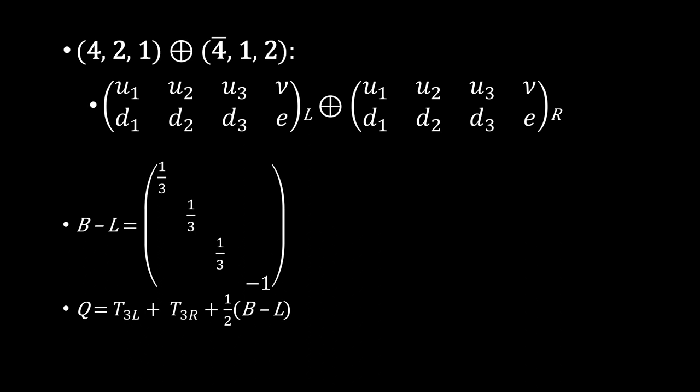This model explains charge quantization. While electric charges are integer multiples of some smallest charge in the standard model, concretely, the 4 and 4 bar of SU(4) color identify lepton number as the fourth color and the tracelessness of the diagonal generator implies that quark's charges are expressed in terms of one-third fractions of lepton's charges.